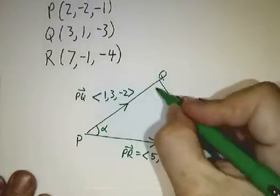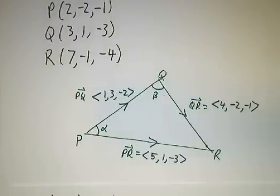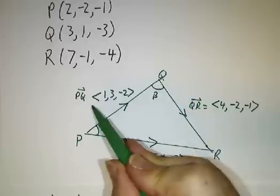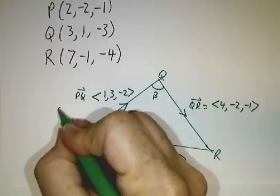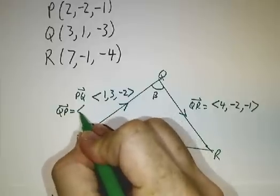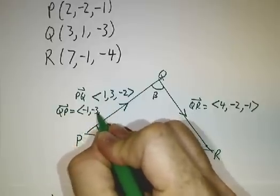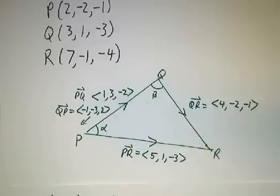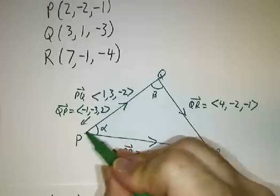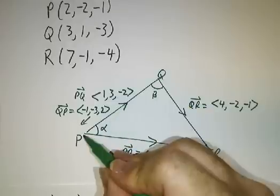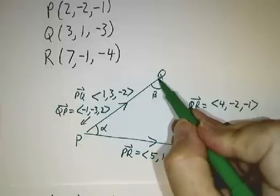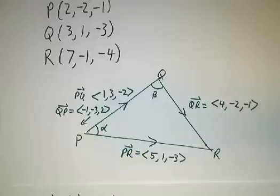Next thing we're gonna do is we're gonna try to figure out the angle at Q. Call that beta. Now for that, we need the vectors coming out from Q. So instead of PQ, we want QP, and that's negative 1, negative 3, 2. QP is the vector going this way, PQ is the vector going this way, they both run between the two points. QP is the coordinates of P minus the coordinates of Q, PQ is the coordinates of Q minus the coordinates of P.